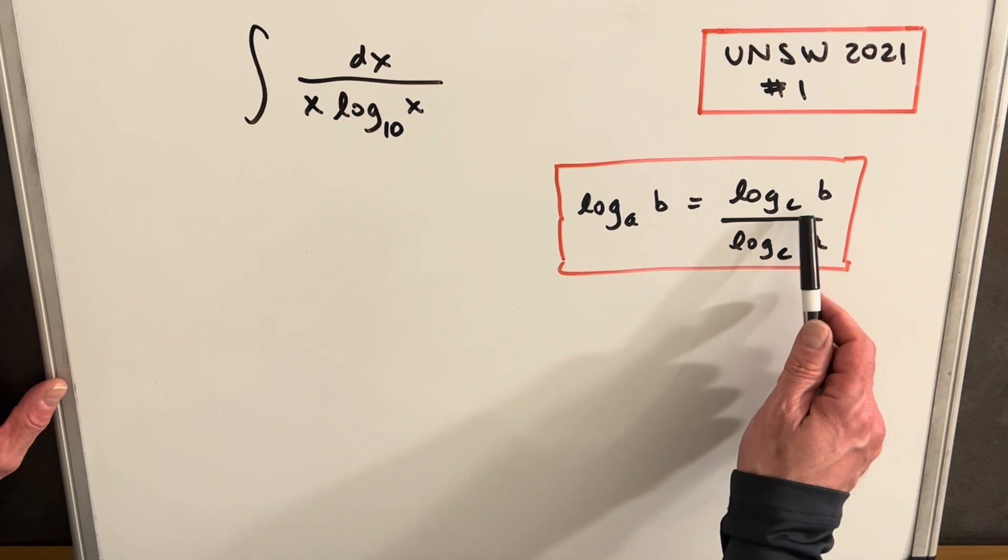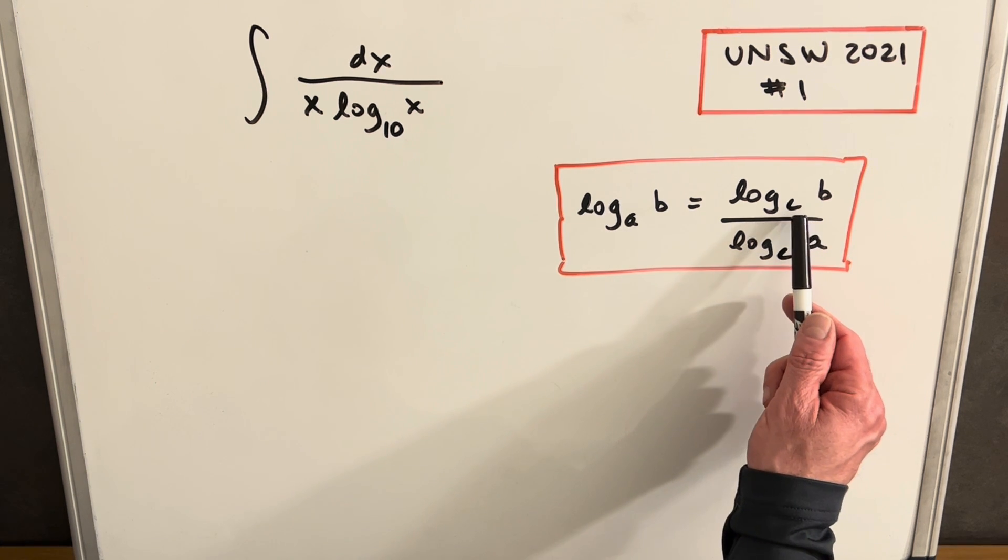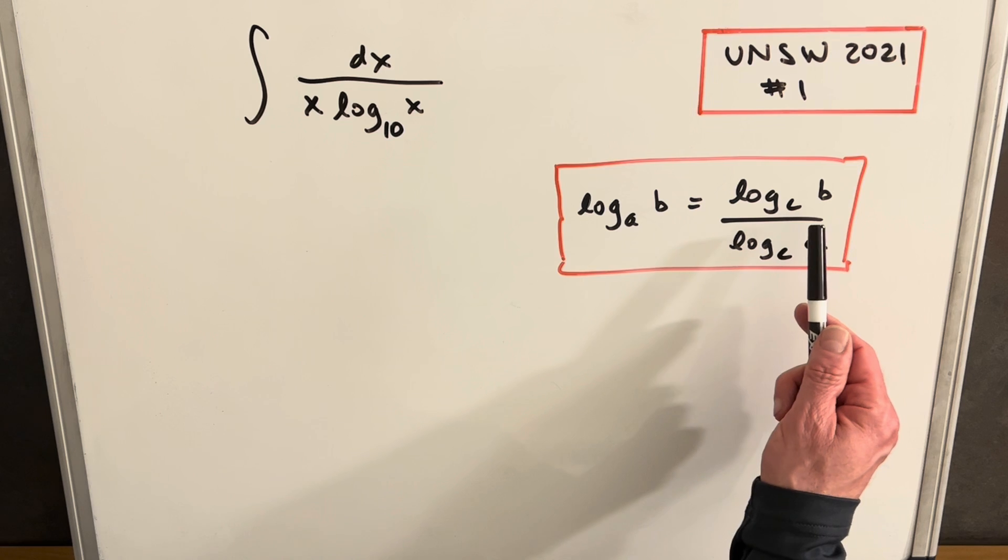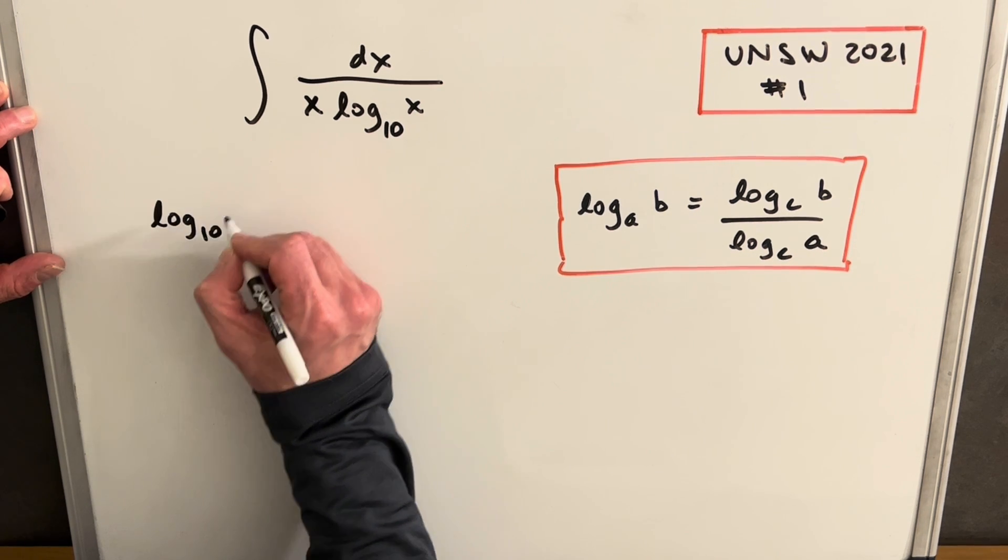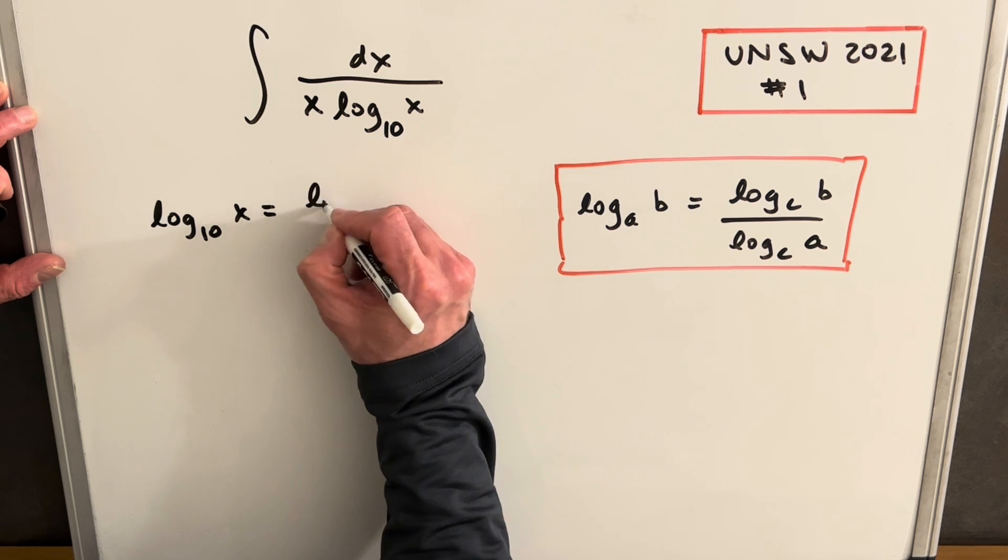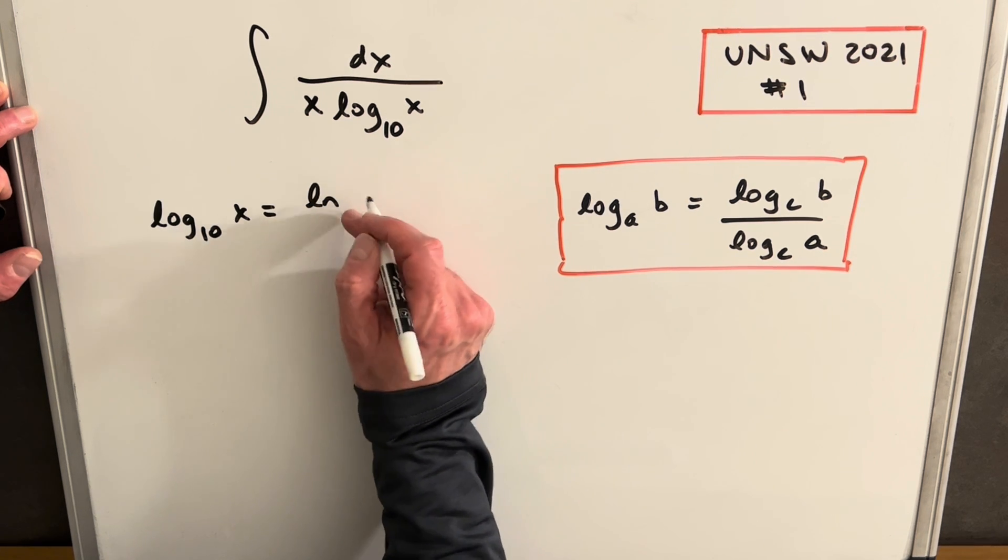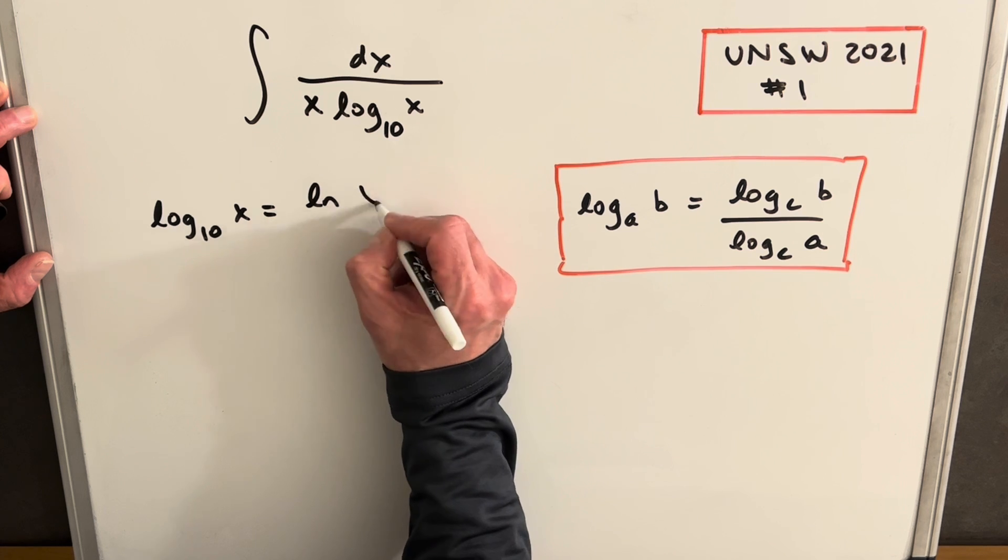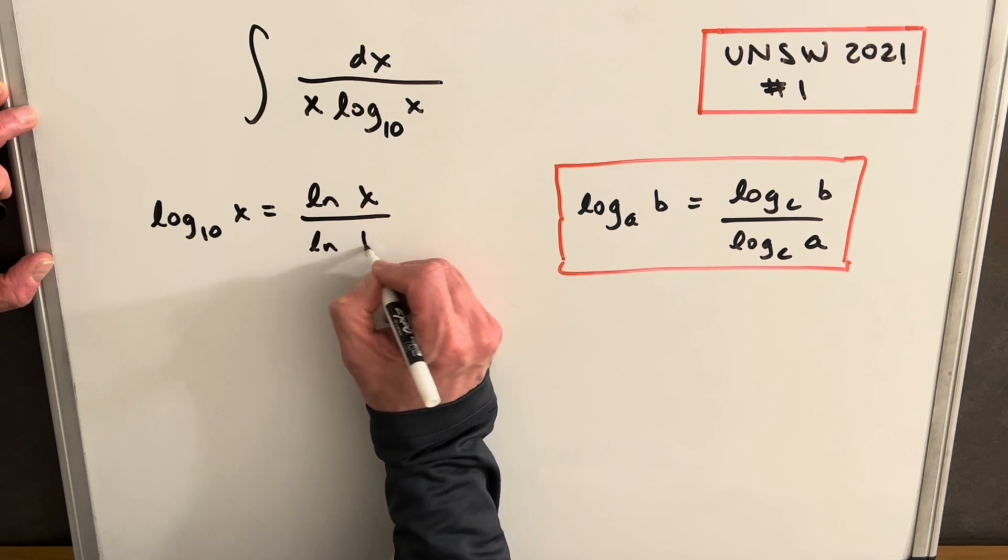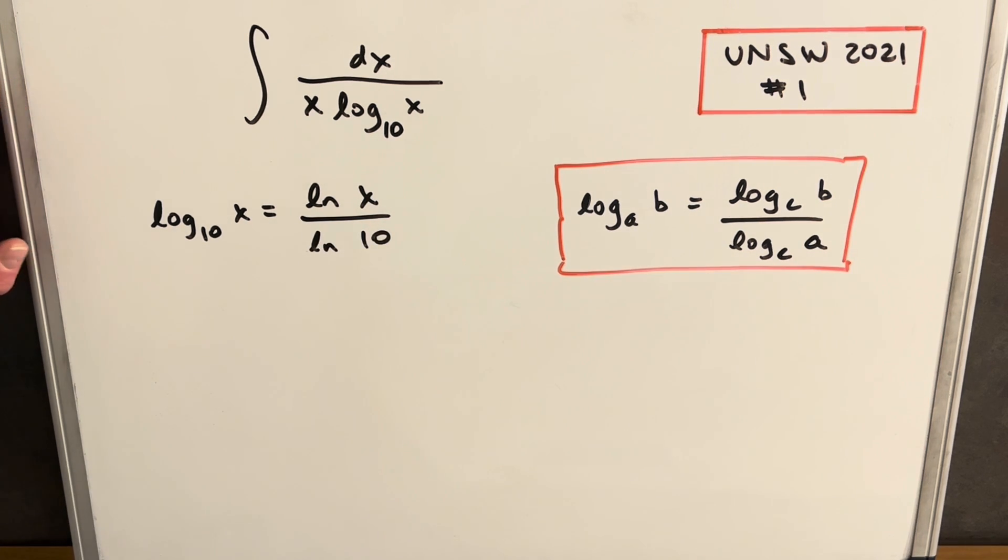In our case, we're going to want our base C to be e - that's just natural log. So let's look at what's going to happen. If we have log base 10 of x, we can write this as natural log of x over natural log of 10, just like this formula here.